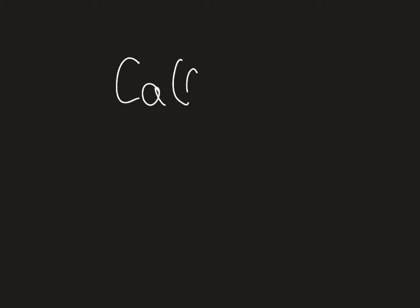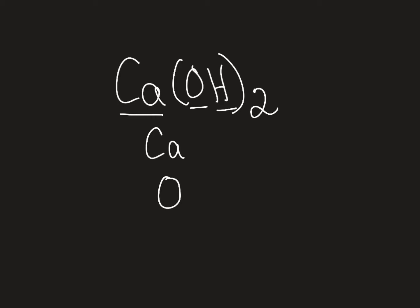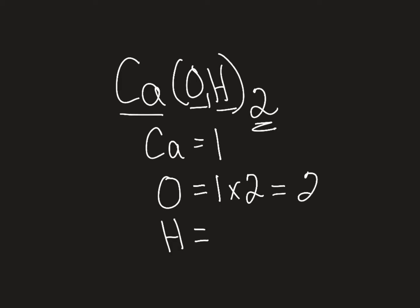Let's look at calcium hydroxide. Now hydroxide is a polyatomic ion, but when we're counting atoms, we're looking at each individual atom. So in this formula we have calcium, oxygen, and hydrogen. Calcium has one atom. Oxygen is in parentheses, so we need to talk about that. Oxygen has an understood one written there, and then we take that one and multiply it by the two on the outside of the parentheses, giving us a total of two oxygens.